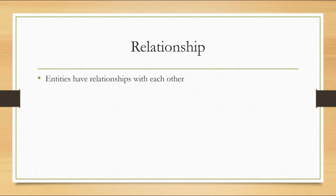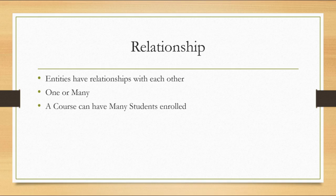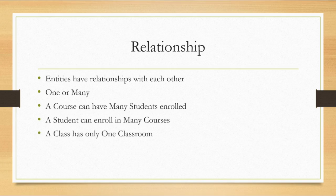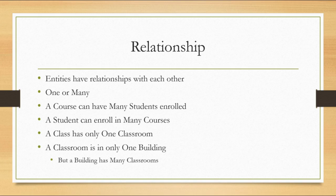Relationships refer to entities. Entities have relationships with each other, and these relationships are typically either one or many. For example, a course can have many students enrolled in it. Conversely, a student can enroll in many courses. A class, however, has only one classroom, and a classroom is in only one building, while a building can have many classrooms. So relationships between entities are typically one or many.